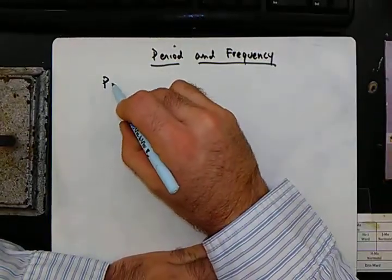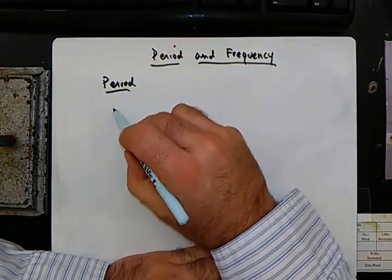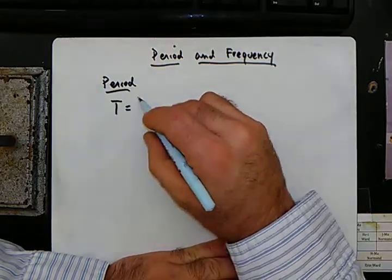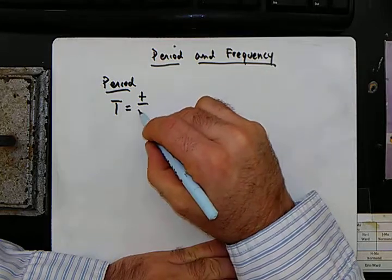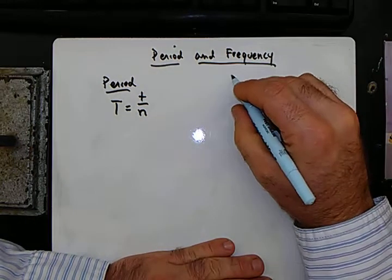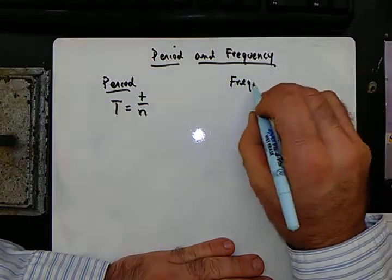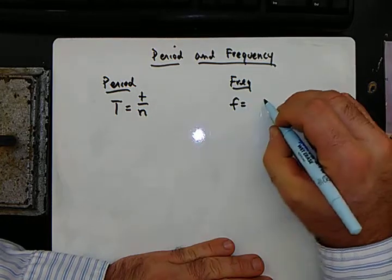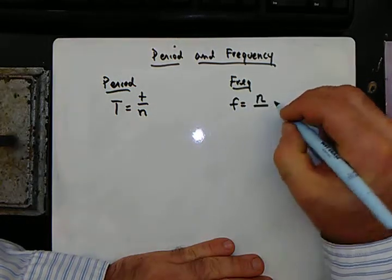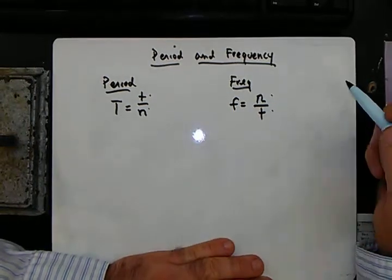So we said that the period formula is the period equals the time over the number of revolutions. We said that the frequency is equal to the number of revolutions per time. Notice t over n, n over t.